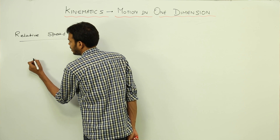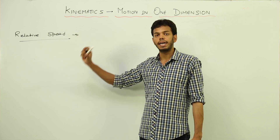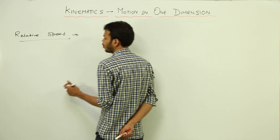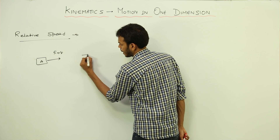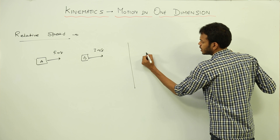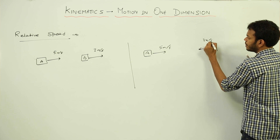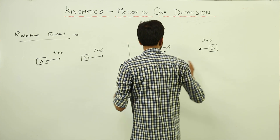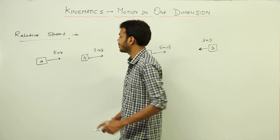The definition of relative speed is: it is the speed of a particle with respect to another moving particle. This implies both objects are moving. I'll take two basic scenarios: A moving at 5 m/s and B at 3 m/s in the same direction, and then A at 5 m/s and B at 3 m/s in opposite directions. The only change between the two scenarios is the direction of B.